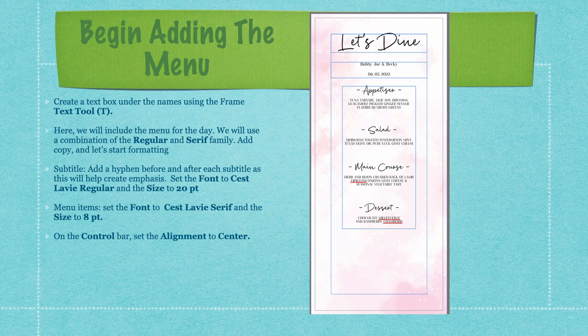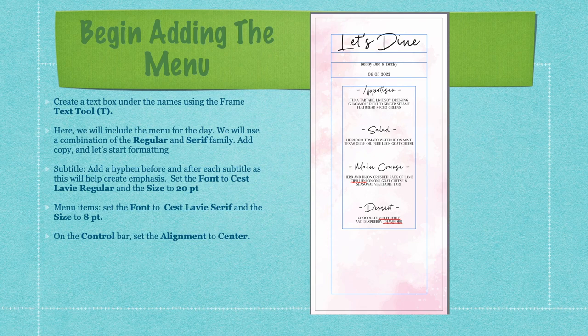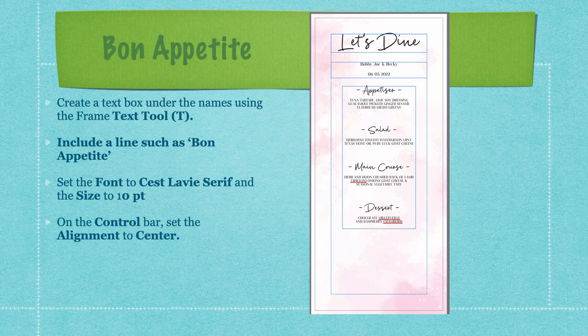For expediency, one text frame was used for all the menu content, but a word of caution: you could use multiple separate text frames — even eight — putting subtitles and menu item descriptions in separate frames. This makes them very easy to control later on. Then create a final text box under the menu using the frame text tool, add a line such as 'Bon Appétit,' set the font to Sailor V at 10 points, and set alignment to center.